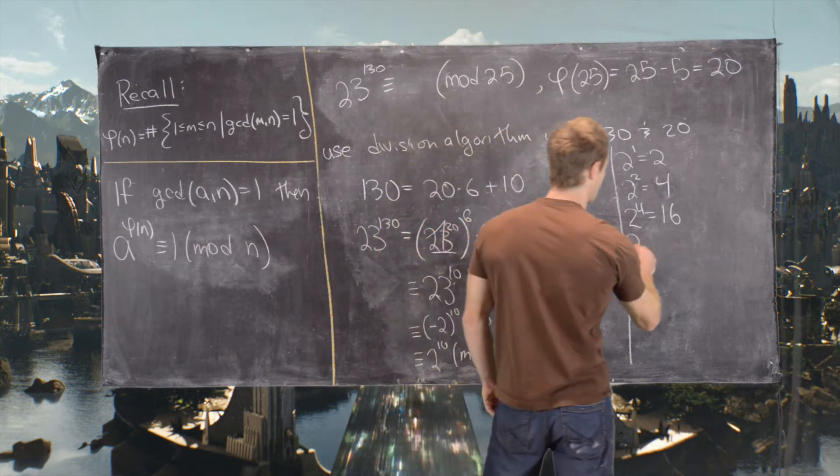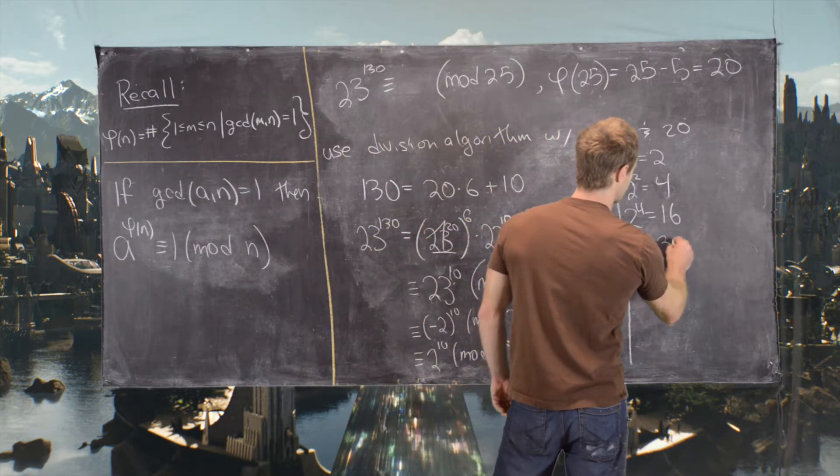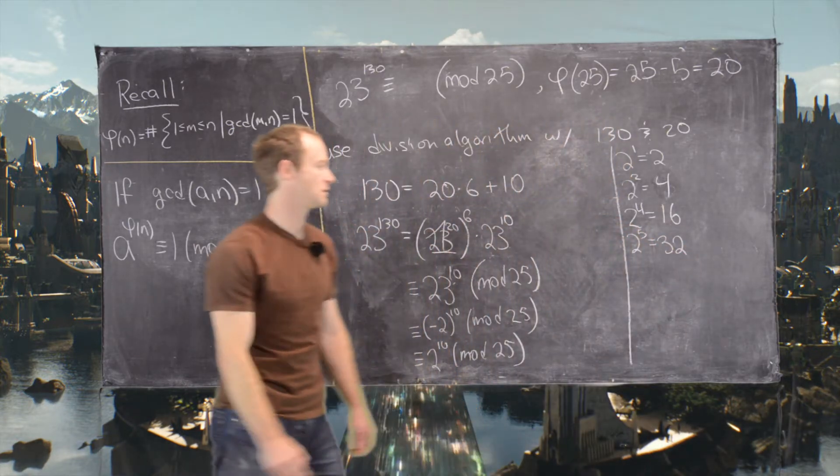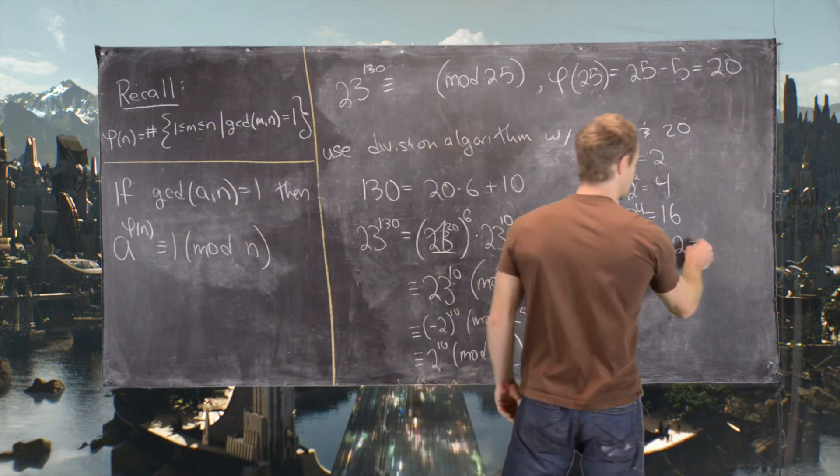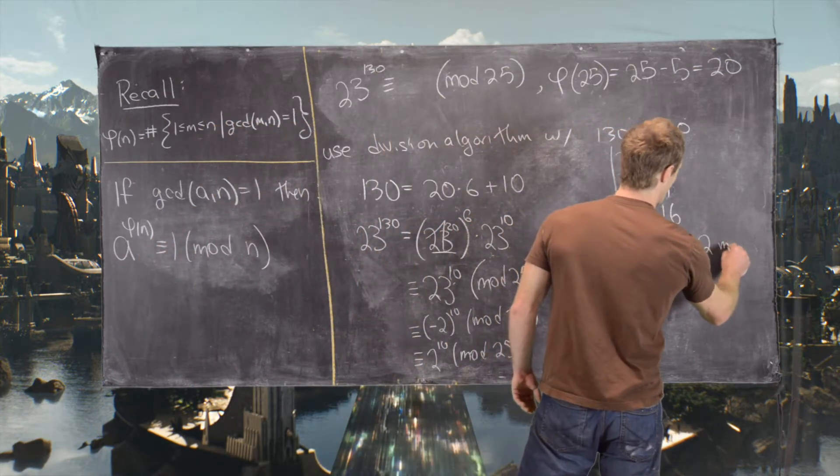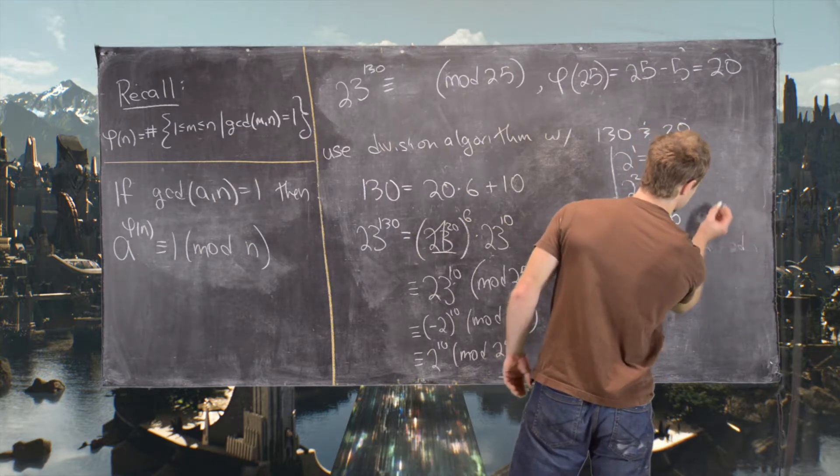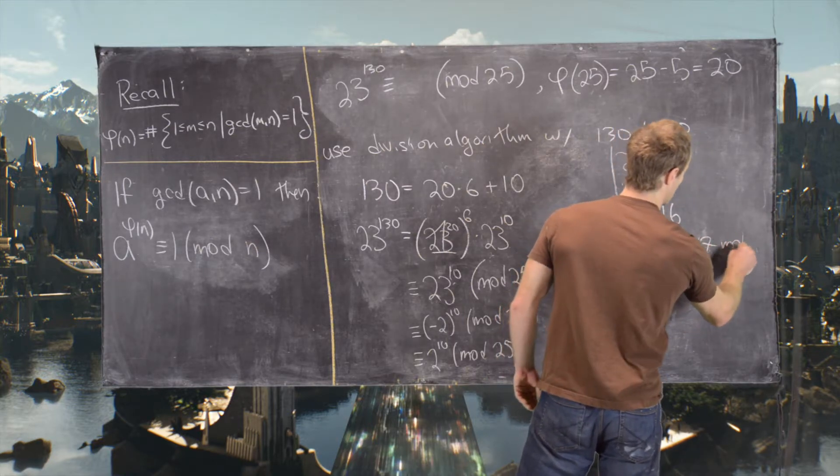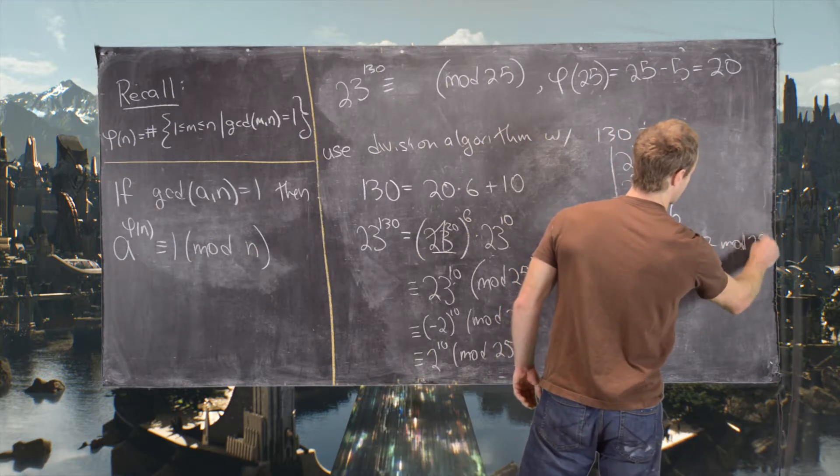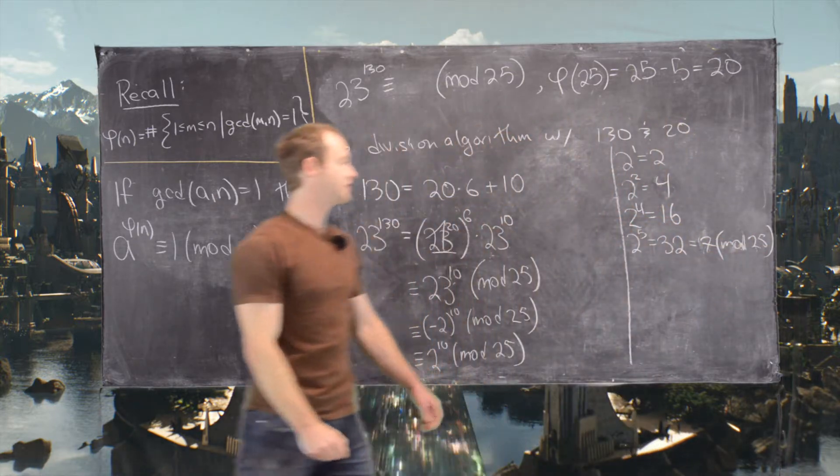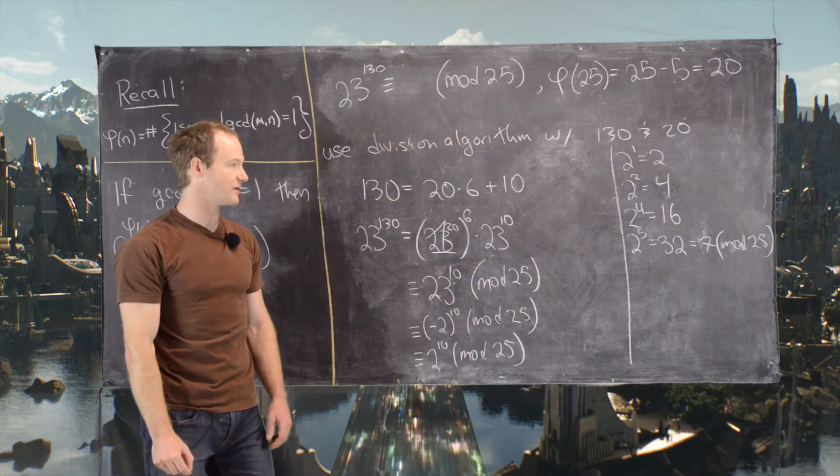And then 2 to the 4 is 16 mod 25. And then we notice that 2 to the 5 is equal to 32. But 32 is equal to 7 mod 25. So since 2 to the 5 is congruent to 7 mod 25,